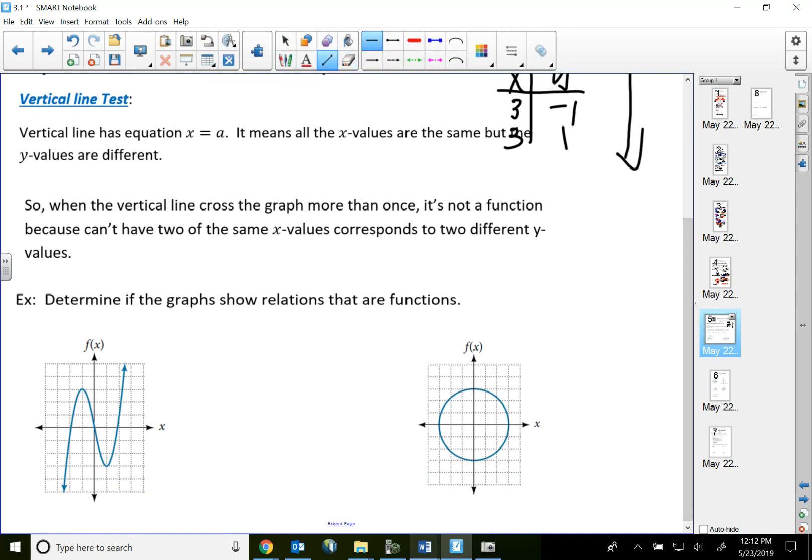So all you got to do is draw a vertical line anywhere on the graph. If you only touch it one time, then we're good, because that means it's only one x value. Can't have the same x. So if you only touch it one time, it's a function.